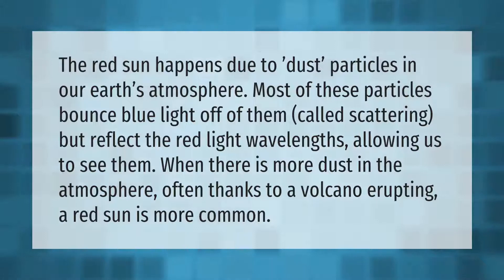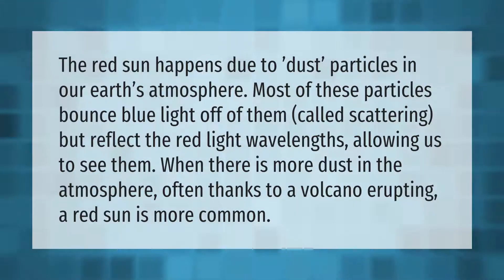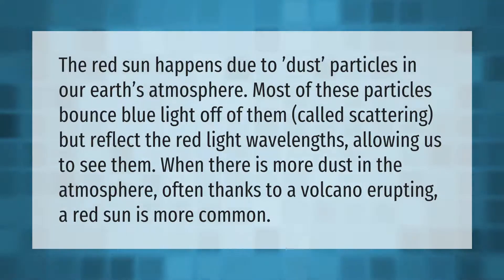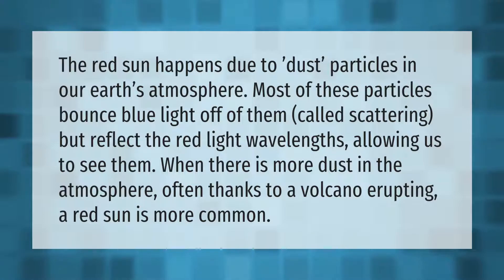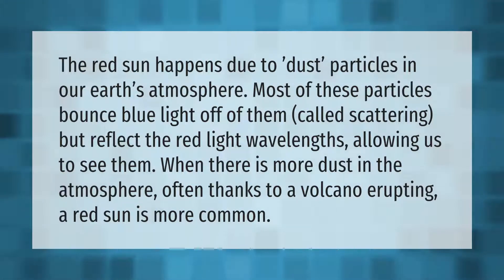The red sun happens due to dust particles in our earth's atmosphere. Most of these particles bounce blue light off of them, called scattering, but reflect the red light wavelengths, allowing us to see them.